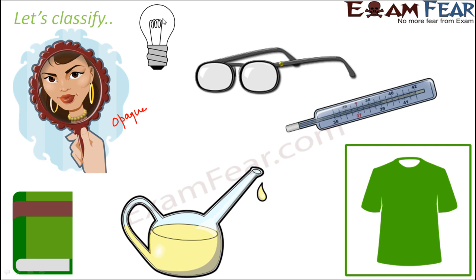Look at the bulb — the glass on the bulb. Is it transparent, translucent, or opaque? It is definitely transparent because it allows you to see the filament inside the bulb through the glass. Similarly, the glass in spectacles is also transparent because it allows you to see through it. The thermometer glass is again transparent — it allows you to read the measurement. Think of a shirt — it is opaque because through the shirt you are not able to see what is on the other side. Similarly, a book is opaque because you are not able to see what is on the other side.